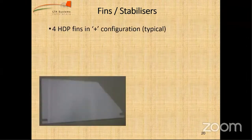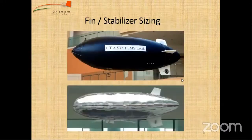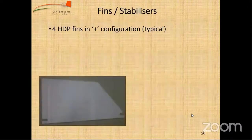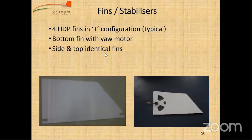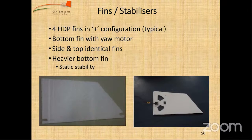There are different fin placement configurations - the typical plus configuration and an X configuration. In the plus configuration, we make the lower fin heavier for static stability: the center of buoyancy (center of volume) is above, and we want the center of gravity at the bottom, like a suspended pendulum. This is why heavy components like the yaw motor are placed at the bottom fin. The slits or holes in the fin allow air to pass through the rotor.